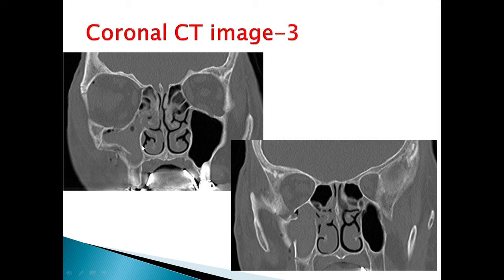The coronal CT image depicts the fractures very well. We can see there are acute comminuted fractures of the posterior, lateral, and medial walls of the right maxillary sinus with hemosinus. We can also see a fracture of the right orbital floor, and a non-displaced fracture of the right lateral orbital wall with some air loculi within the superior aspect of the right orbit.